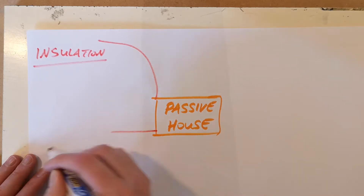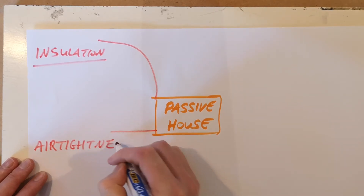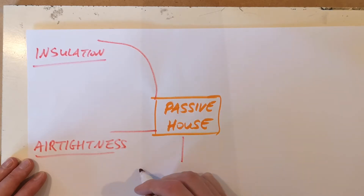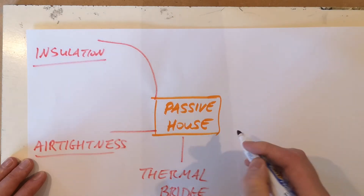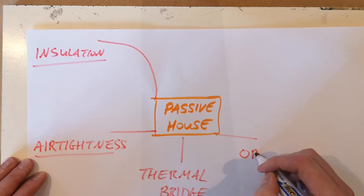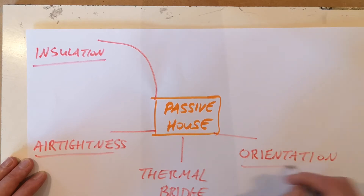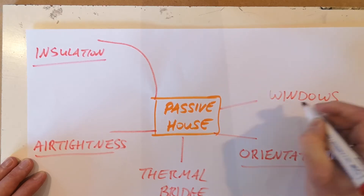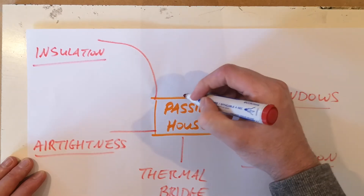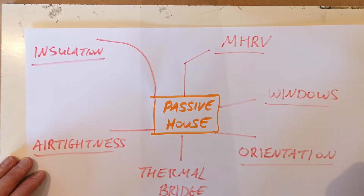So number one is insulation. Number two is air tightness. Number three is thermal bridges — and the fact that there are no thermal bridges. Number four is orientation. Number five is windows. And number six, finally, is MHRV — mechanical heat recovery ventilation.